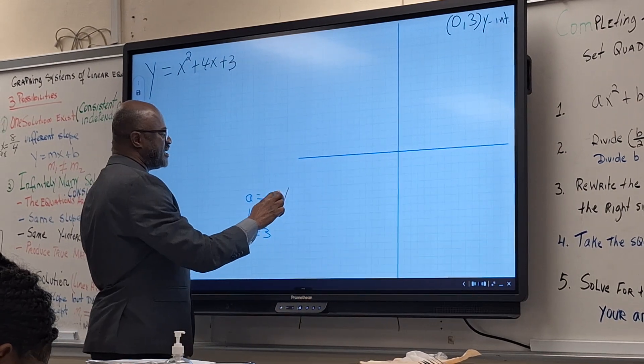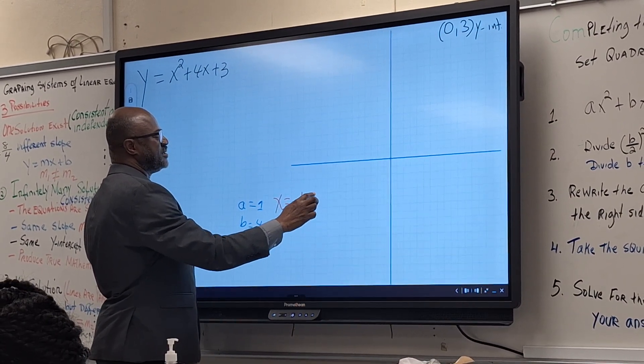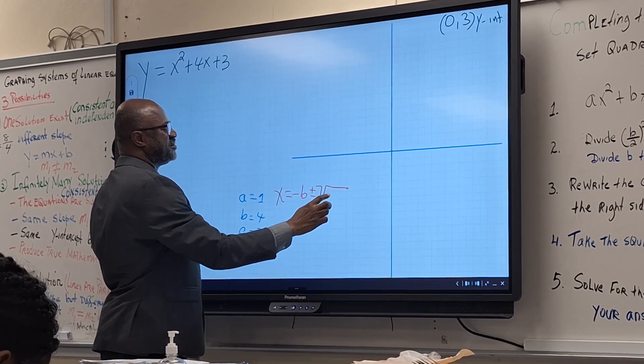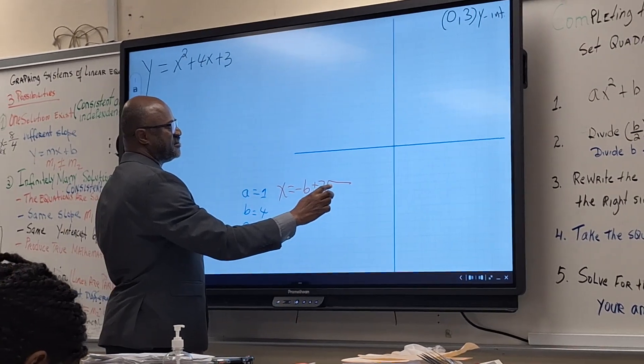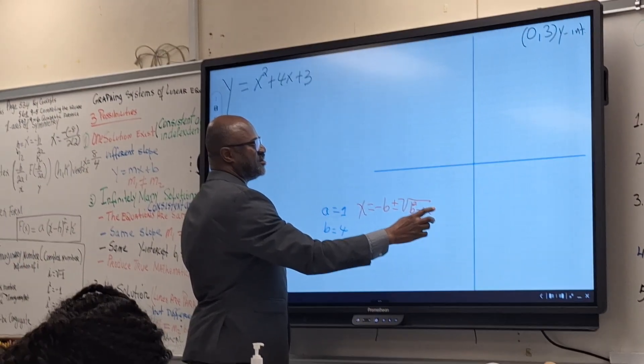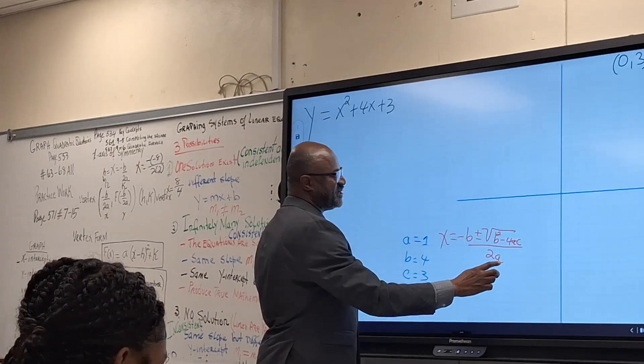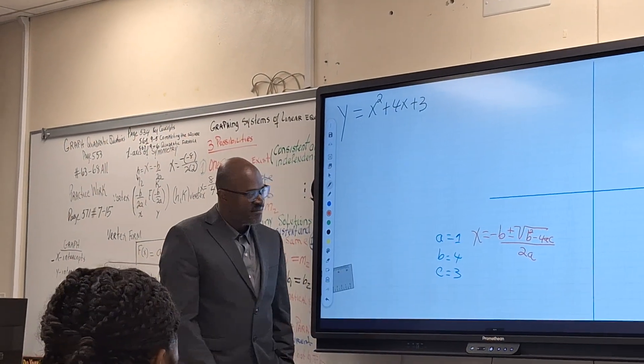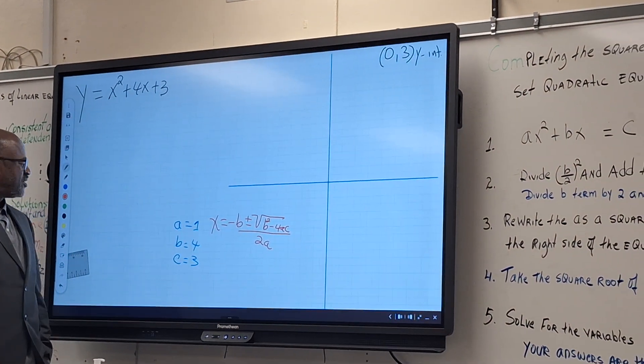So our guidelines: x equal minus b plus or minus square root of b squared minus four ac over two a. That will give you the x-intercept. And from there, we might get the axis of symmetry and also find the vertex.